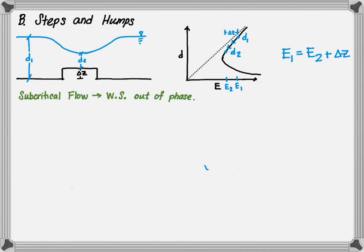Let's first analyze steps and humps. This first example shows a subcritical flow condition where the water surface is out of phase. As the flow moves from point one to point two, you will see a dip in the flow as it goes over the step. This can be illustrated by the specific energy diagram, with depth on the y-axis and energy on the x-axis. The flow depth will be higher at point one than at point two. The difference between the energy at point one and point two is the step height, so the energy at point one equals the energy at point two plus delta z.